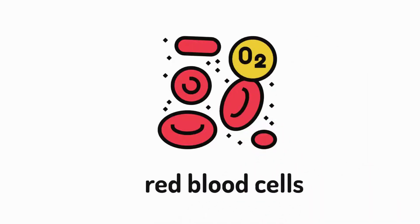Let's start with the donut-shaped red blood cells. They're the most common type of blood cell and transport oxygen throughout our body.